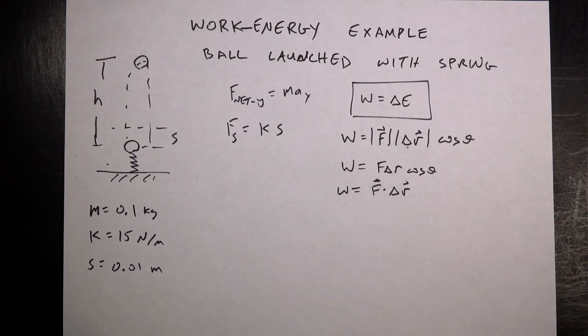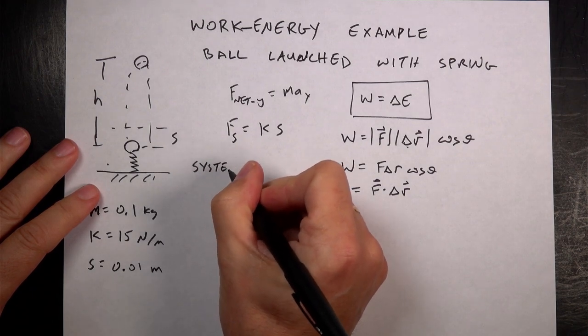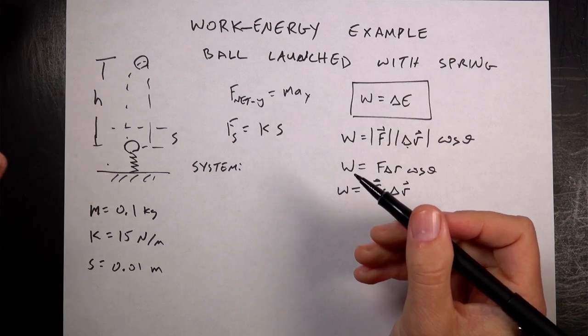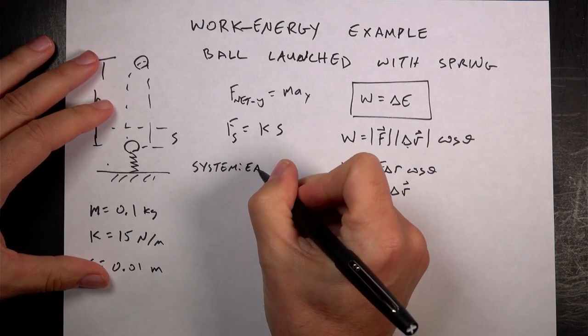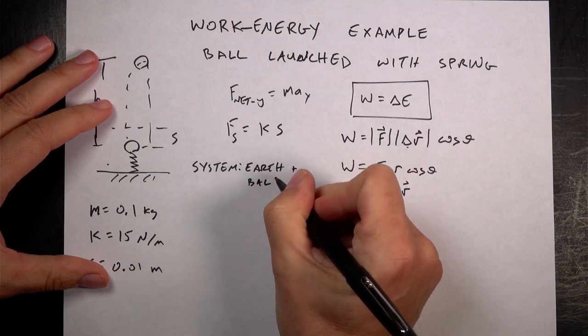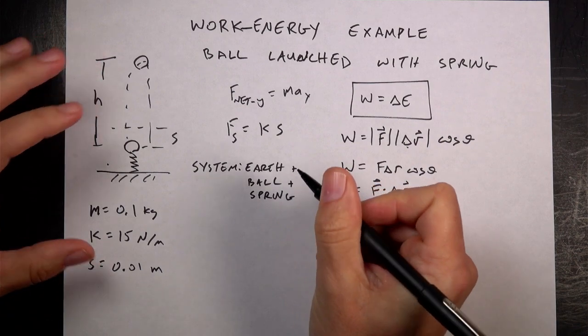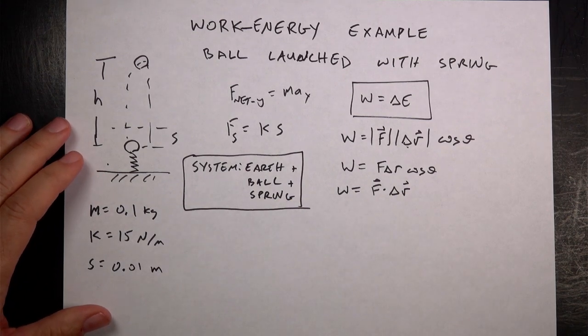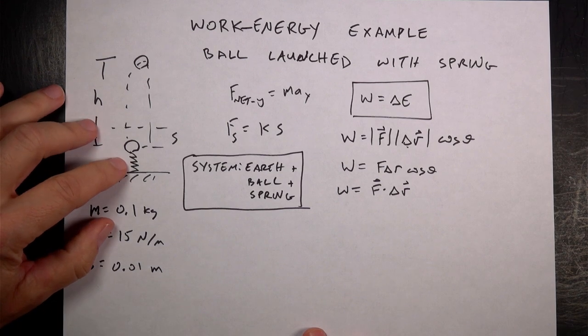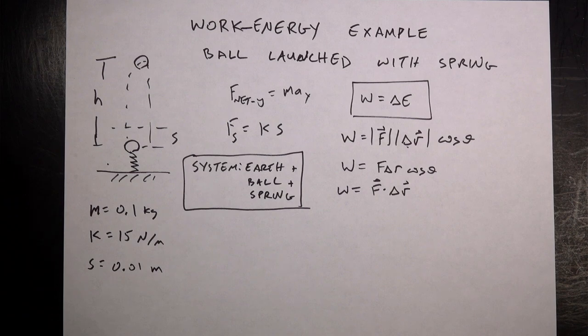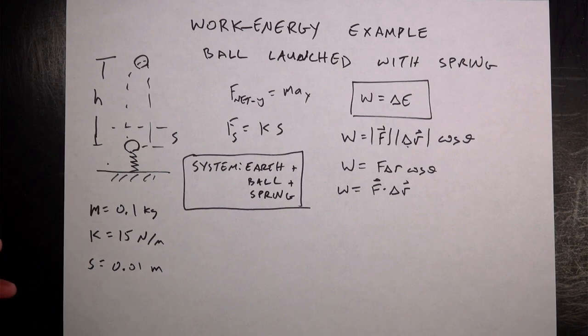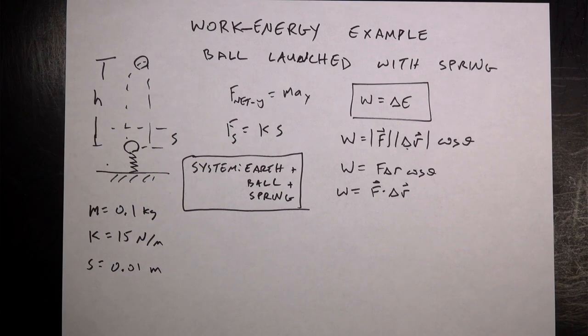But what about the change in energy? This part, you actually need to do something before you talk about change in energy, and that's define your system. Because this says that the work done on a system is a change in energy, but what is a system? So in this case, we need to pick what we're going to include in our system. So let's include the earth plus the ball plus the spring. And this is really useful. Because if I do that, then everything that I really want to know about is in my system. Because what interactions do I have? We'll have the spring pushing on the ball. Well, the spring force is part of my system. So I don't need to have work done by the spring. There's a gravitational force on the ball. Well, again, the earth and the gravitational interaction between the ball and the earth is part of my system. So I don't have work done by that.